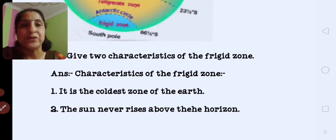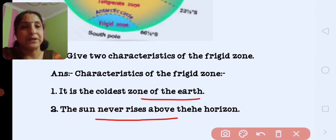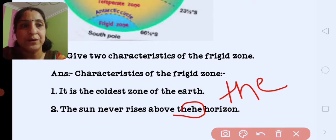Next, give two characteristics of the frigid zone. It is the coldest zone of the earth. The sun never rises above the horizon.